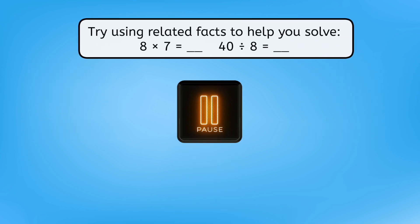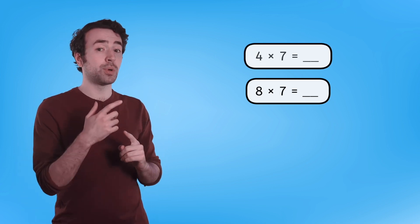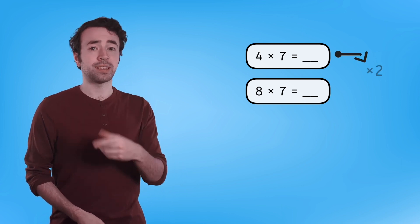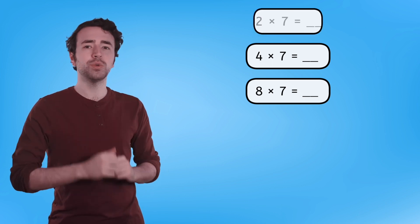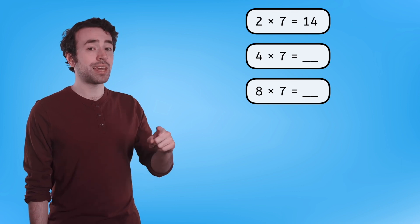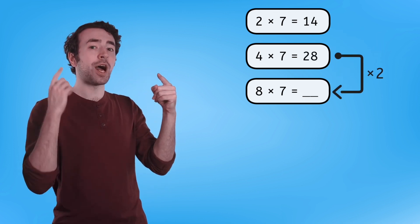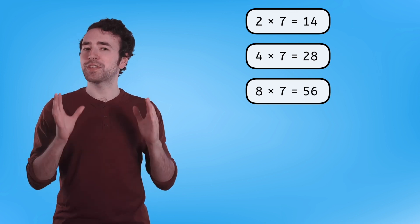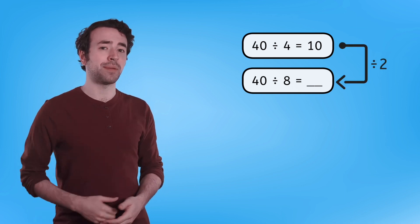In your guided notes, try using related facts to help you solve eight times seven and forty divided by eight. Since eight is twice as much as, or double, four, we can use four times seven to help us solve eight times seven. If you know four times seven, then you can double that and have your answer to eight times seven. But if you're not quite sure about four times seven, you could also try doing two times seven first. Two times seven equals fourteen. We can double that to help us solve four times seven: fourteen and fourteen is twenty-eight. And then we can double that to help us with eight times seven: twenty-eight and twenty-eight is fifty-six. That means eight times seven equals fifty-six. And forty divided by eight? Well, forty divided by four equals ten, so that means forty divided by eight is half that amount, or five.